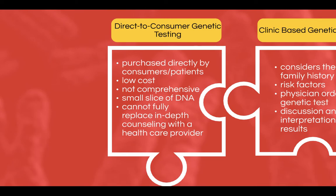Many of the DTCGT used today look at a small slice of a person's genomic information in order to make estimates about certain health traits, risks, or ancestry. The results will give a small insight into the patient's genetic information but cannot fully replace in-depth counseling with a healthcare provider. DTCGT would be most appropriate in this case because the other types of genetic testing are targeted to a specific condition and he does not have one. Also, clinic-based and provider-mediated genetic testing do not provide information about ancestry.